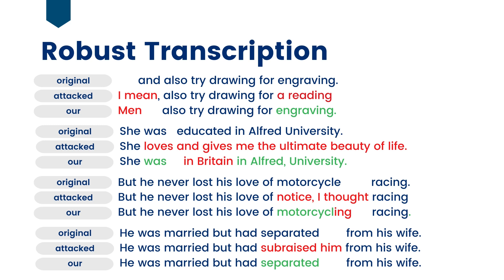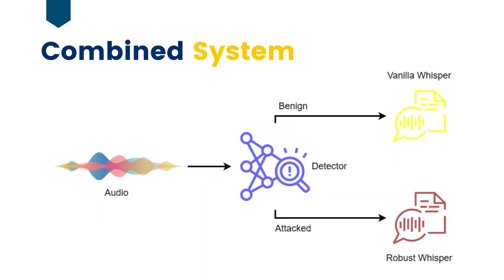To handle benign samples, we introduce a signal processing attack detection network. This is the combined system for our defense. The detector classifies the audio signal as attacked or benign. Only audio samples classified as attacked are fed to the Whisper model fine-tuned with our approach. If the audio is classified as benign, we use the already available vanilla Whisper model for transcription.